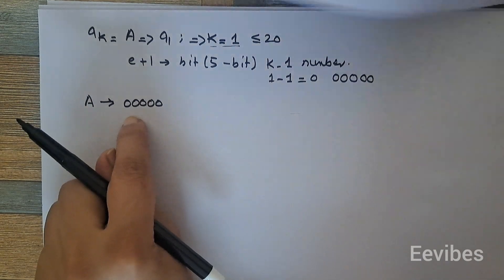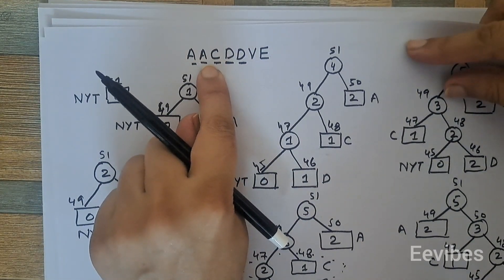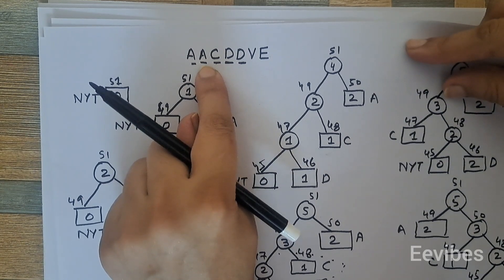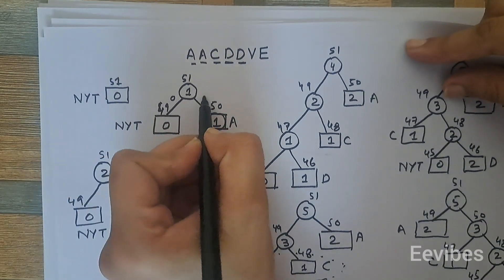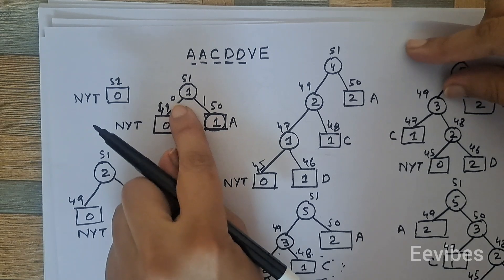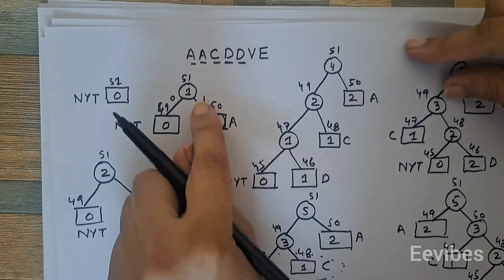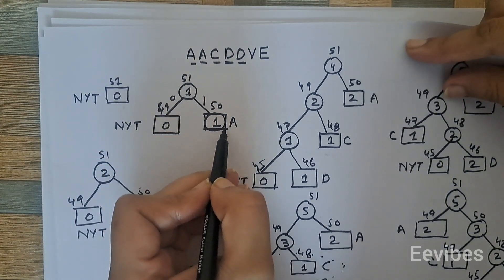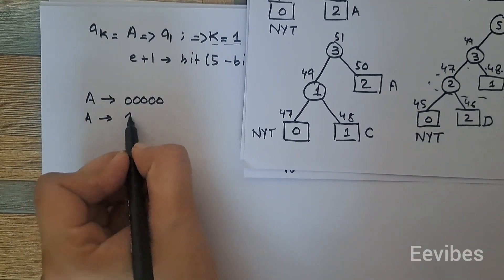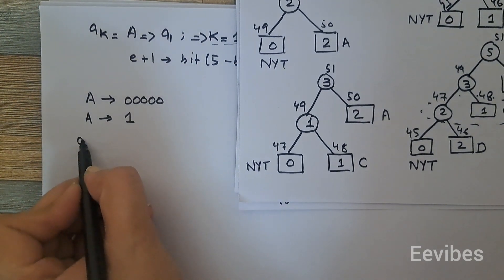The next arriving symbol is 'a' again. Before this symbol's arrival, the NYT code is now '0' and the code for 'a' is '1', based on the binary tree property where left branches are assigned 0 and right branches 1. Since 'a' is already present in the tree, we simply traverse from the root to 'a' and transmit code '1'.